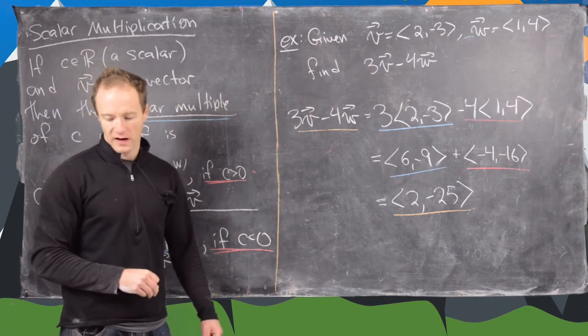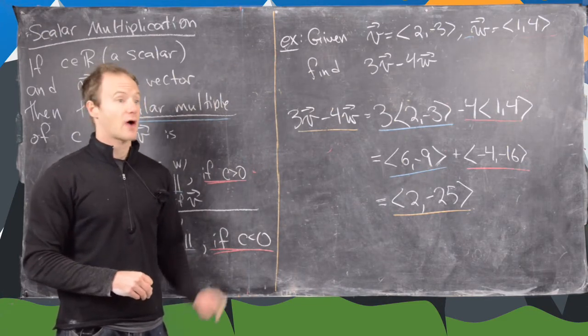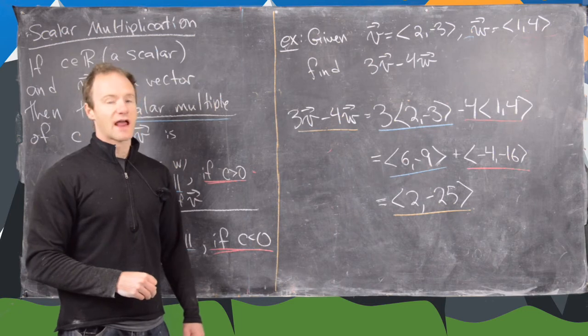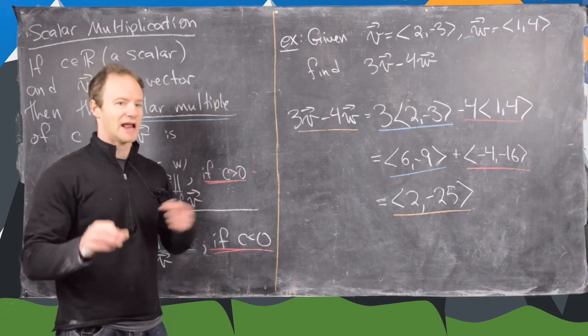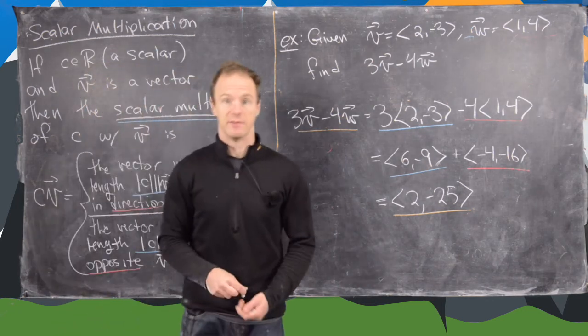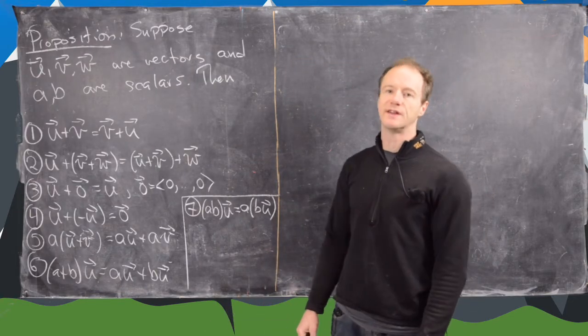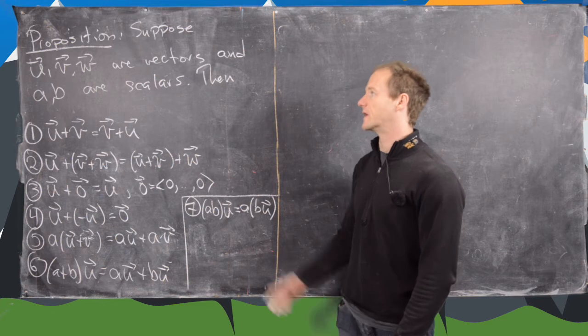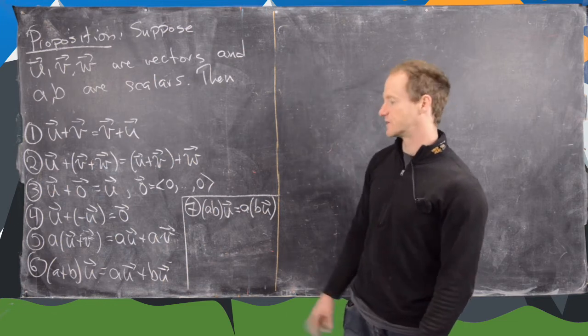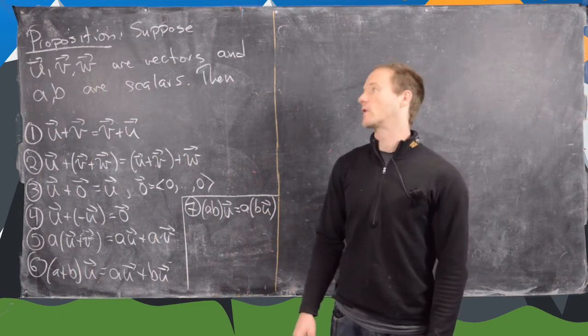I'm going to clean up the board and then we're going to write some properties of scalar multiplication and vector addition and how they interact. And we'll prove some of them. So we're ready to look at some properties of vector arithmetic. So let's see this proposition.